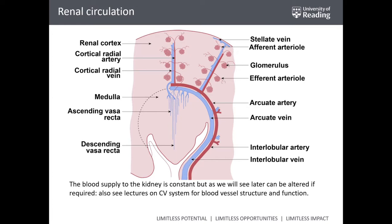The renal circulation contains an arterial high-pressure component, which converges into the Bowman's capsules, and then a venous low-pressure component, composed by the vasa recta around the loop of Henle and ascending and descending limbs, involved in the reabsorption of anything secreted and reabsorbed through the nephron. The blood supply to the kidney is fundamental for two reasons: first, the kidney is a tissue like any other tissue and needs blood to survive; second, the function of the kidney is to filter blood, so it requires a constant supply.